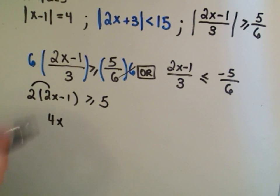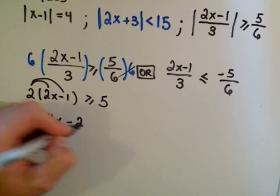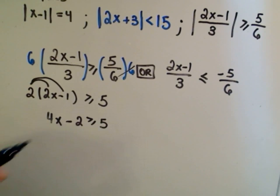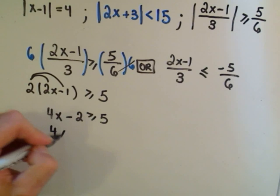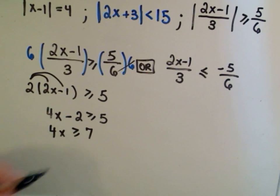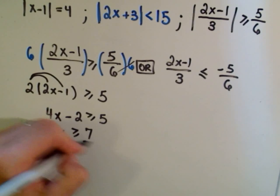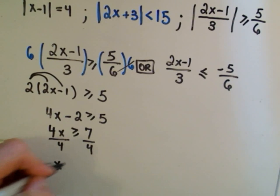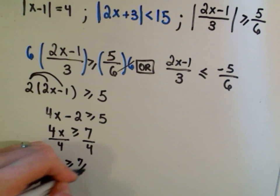If I distribute, I get 2 times 2x, which is 4x. 2 times negative 1 is negative 2, greater than or equal to 5. Then I add 2 to both sides to get 7. Divide by 4. We'll get x greater than or equal to 7 fourths.